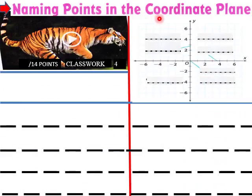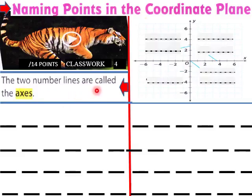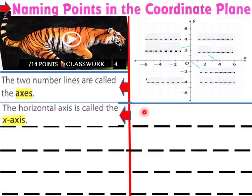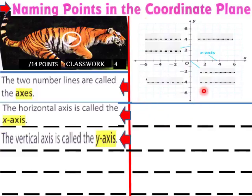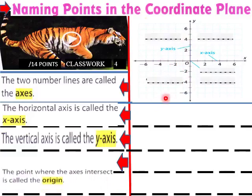Naming points in the coordinate plane — here is a coordinate plane. We're going to name points here. Two number lines are called the axes; each one is called an axis. We have the y-axis and the x-axis. The horizontal axis is called the x-axis — here's your horizontal right here. Then the vertical is called the y-axis — y-axis is here.